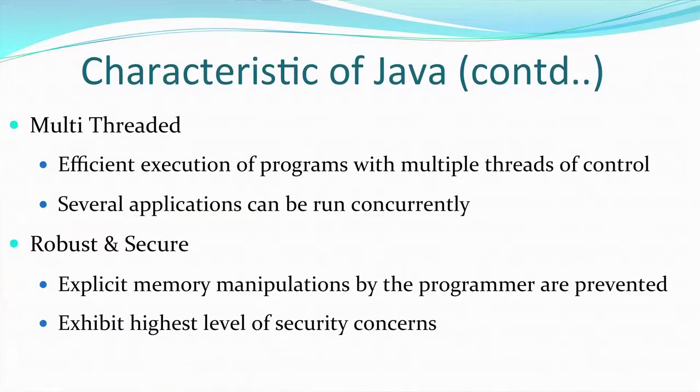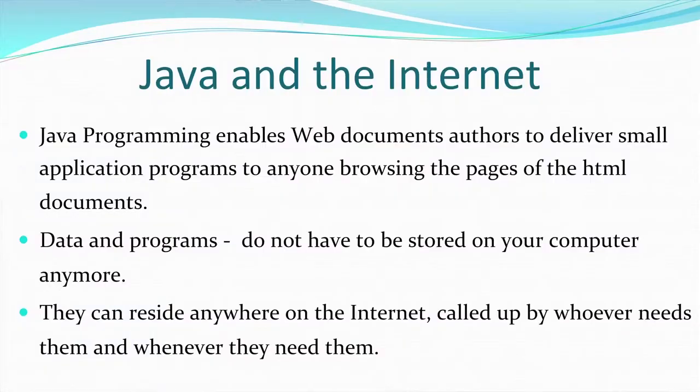Java is a multi-threaded language, meaning multiple tasks can be performed at one point in time. It has multiple threads of control and several applications can run concurrently. Java is also robust and secure — explicit memory manipulations by the programmer are prevented, and it exhibits the highest level of security concerns a program can have. Because it is object-oriented, encapsulation and abstraction are implemented, along with various other security features, making it a very robust and secure programming language.